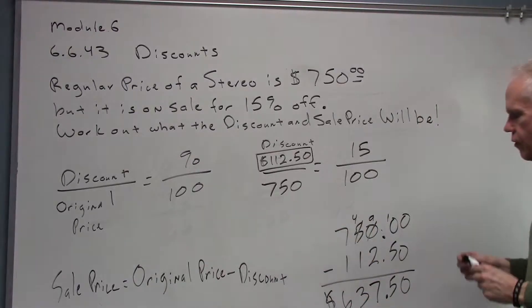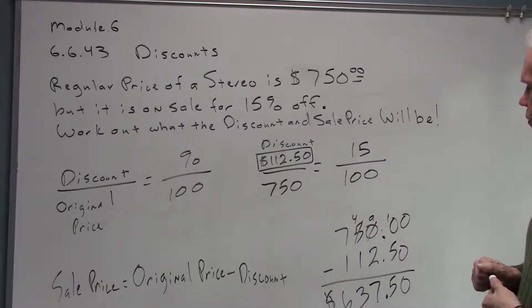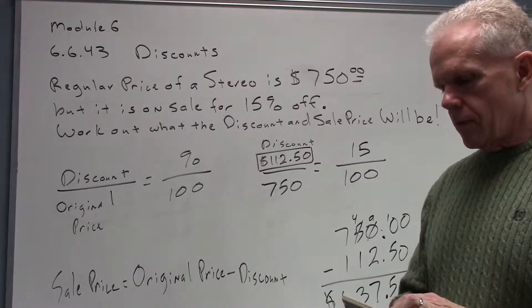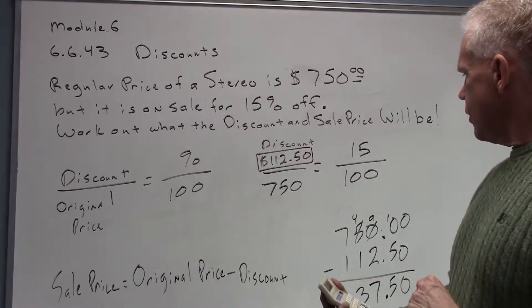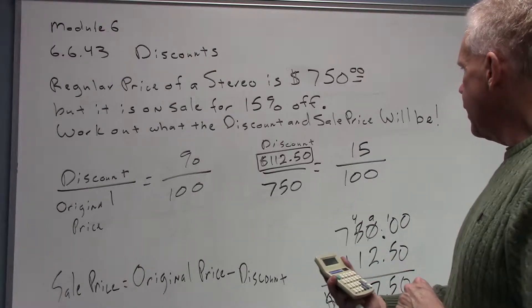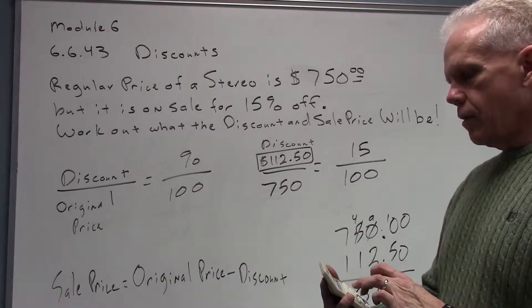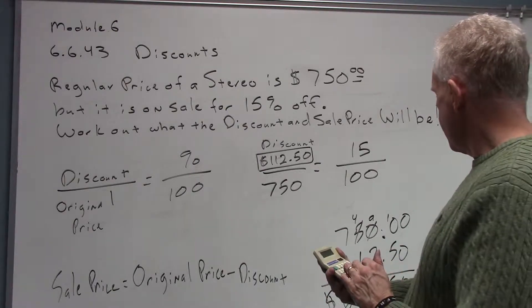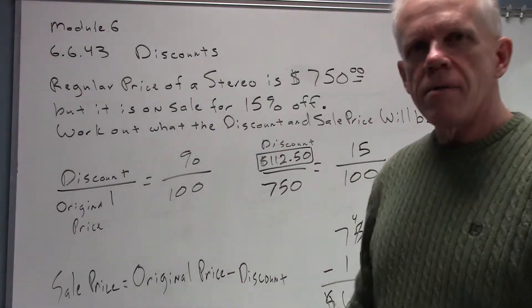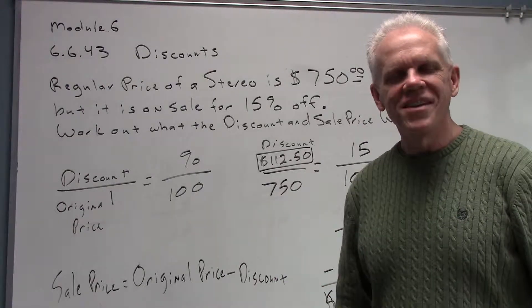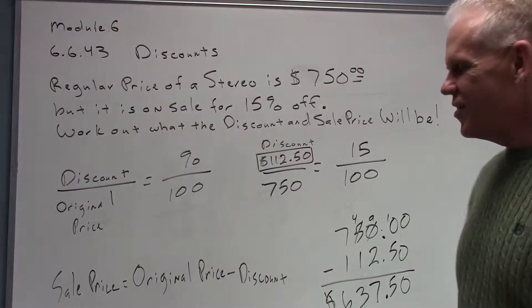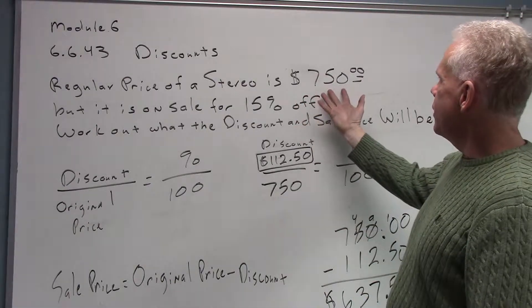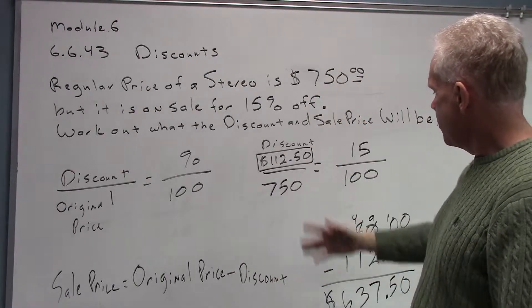Now let me just double-check that with my calculator real quick and do that subtraction. Six thirty-seven fifty — that's it! I can still subtract without a calculator. My stereo that I'd normally get for $750, I'm going to be able to get on sale for $637.50.